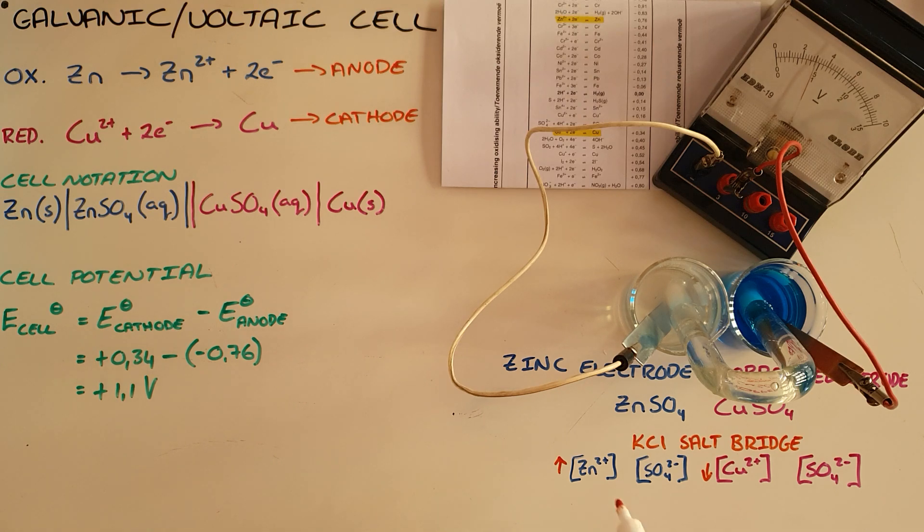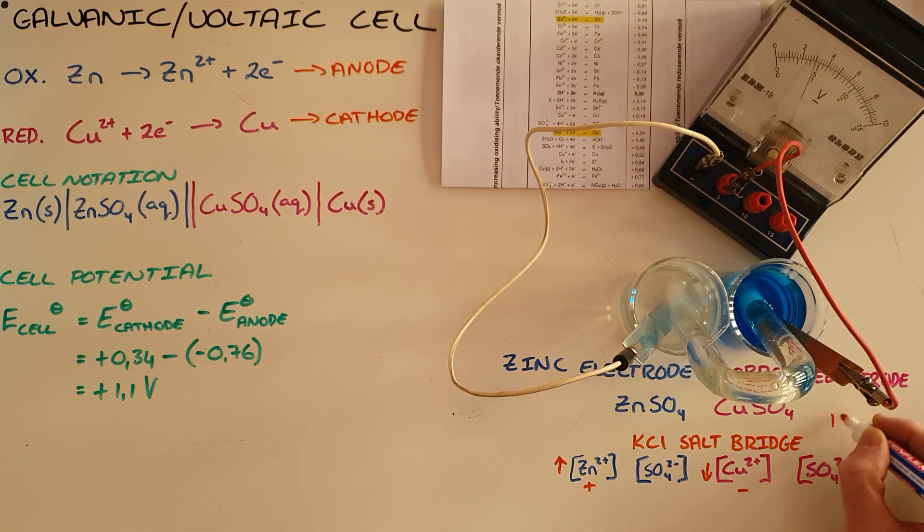As a result, we can see here that since the concentration of positive ions in this beaker increases, we can see that this beaker would become increasingly more positive. While since the positive ions are leaving this solution, this beaker would become increasingly more negative, which is the function of the salt bridge, which we know is potassium chloride.